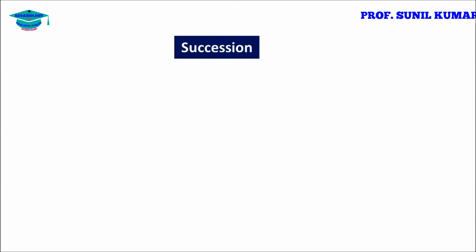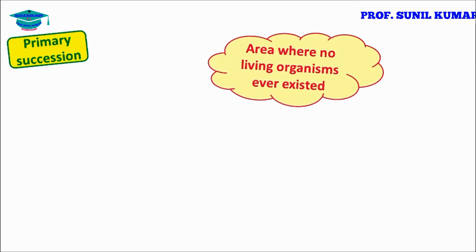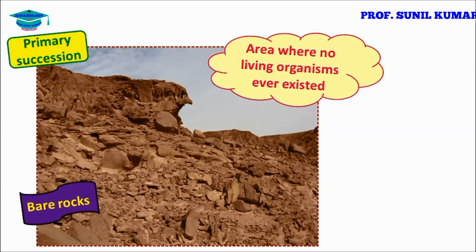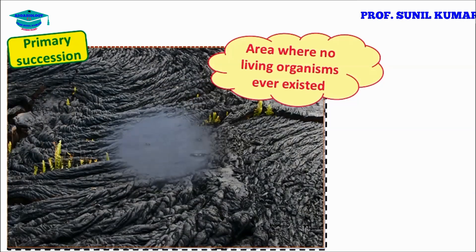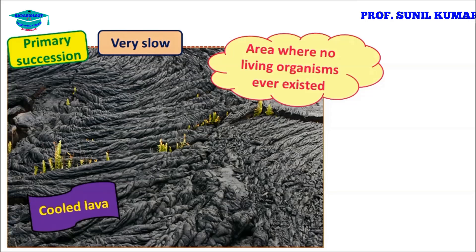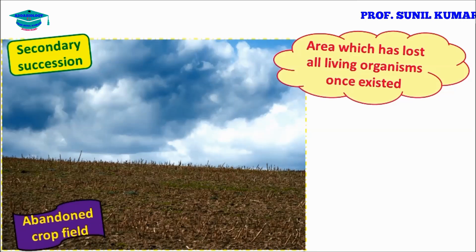There are two types of succession: primary succession and secondary succession. Primary succession occurs in an area where no living organism has ever existed — such as bare rocks, newly formed ponds, or cooled lava. It is a very slow process. Secondary succession occurs where life existed previously but was destroyed for some reason, and life returns to that place. It is faster than primary succession.